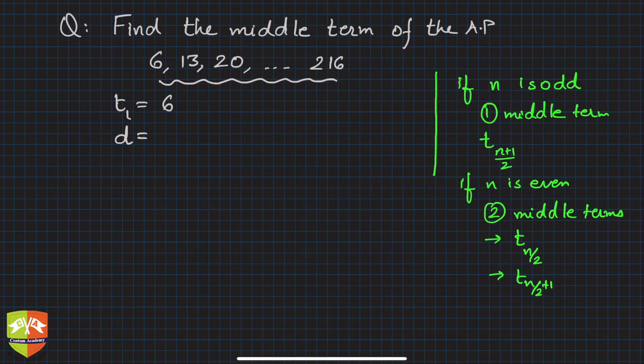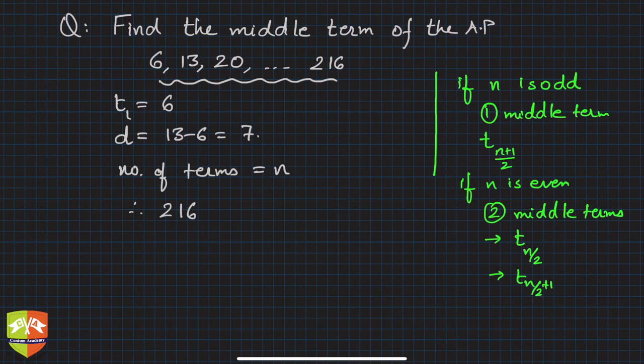Now let's find out the number of terms. Let's say number of terms is n. Therefore 216 is the last term, so 216 is the nth term. The formula is tn = t1 + (n-1)d, that is what we have learned.